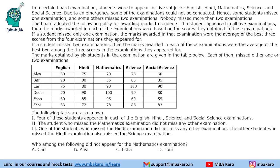slot 1 DILR. It says that in a certain board examination, students were to appear for five subjects: English, Hindi, Mathematics, Science, and Social Science. Due to an emergency, some of the examinations could not be conducted. Hence, some students missed one examination and some students missed two examinations. Nobody missed more than two examinations — so either a person missed one exam or two exams.